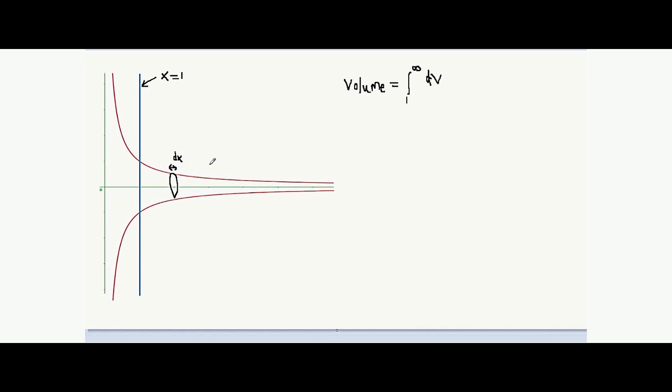Now for the elemental volumes, we need to consider the cross sectional area which will be a circle and we consider the elemental length dx. Now this cross sectional area which we considered, it will have a radius, it will be a circle of radius y which is equal to 1 by x in this case because it's the graph of xy equal to 1. So our elemental volume dv can be written as the product of the cross sectional area and the elemental length. So pi r square, r here is nothing but y, the radius, into dx. So that gives us the value of dv.